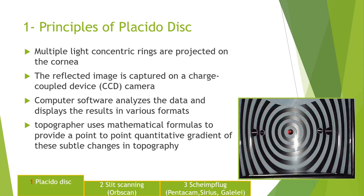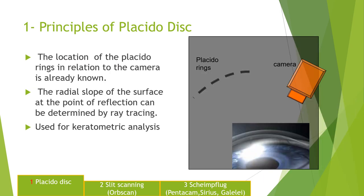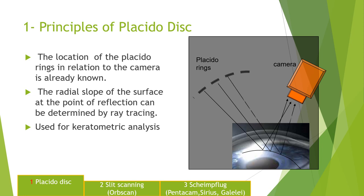Placido disk: you have multiple concentric light rings which are projected onto the cornea and from there you analyze the shape of the cornea. The Placido rings are reflected from the cornea and captured by the camera, and that's how the camera analyzes the topography. Remember, it only gives you the topography — it doesn't give you the tomography. So you only study the surface of the cornea, not the cross section or the depth of the cornea.